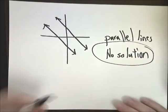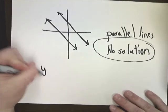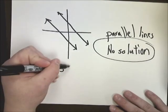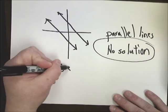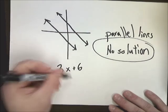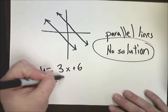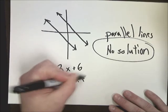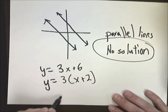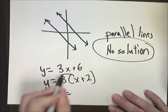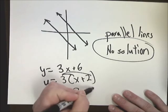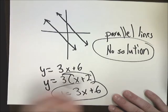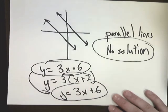There's also another situation in which maybe I write, say, Y equals 3X plus 6, and the other one I'm trying to figure out is Y equals 3 times X plus 2. Well, then when I work this one out, the distributive property part, I get Y equals 3X plus 6, which is exactly the same as the first one.